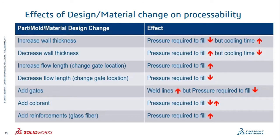Here is a little more knowledge regarding the effects of design and material changes on processability. When you increase wall thickness, pressure goes down but cooling time increases. If you increase the flow length — for example by changing the gate location — it may affect pressure. Adding gates, colorants, or reinforcements will also have various effects. I've listed a few of the common effects that might occur when you make these changes.